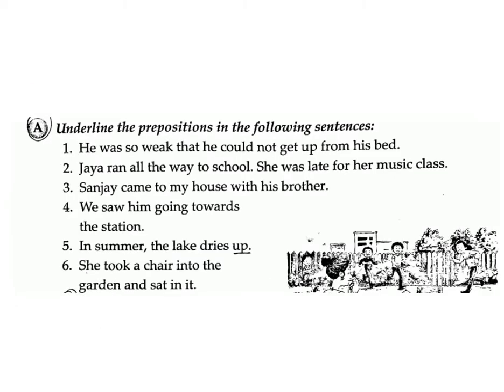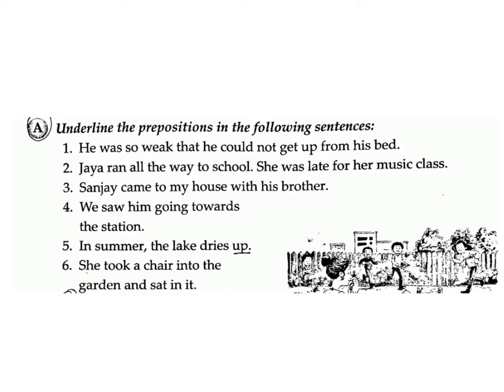Underline the prepositions in the following sentences. Sentence 1: He was so weak that he could not get up from his bed. Answer: from. Sentence 2: Jai ran all the way to school; she was late for her music class. Answer: to, for.